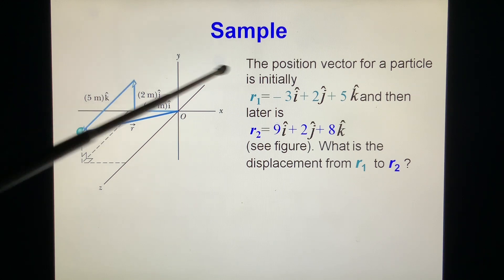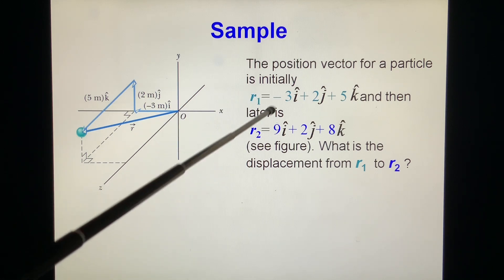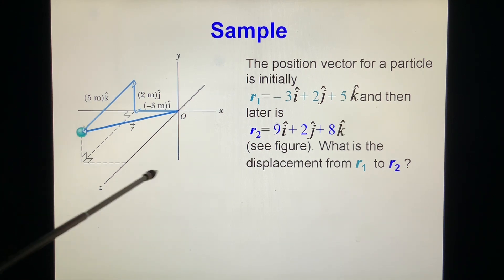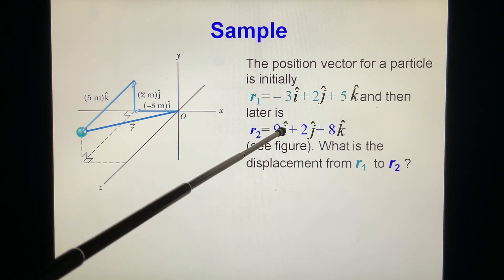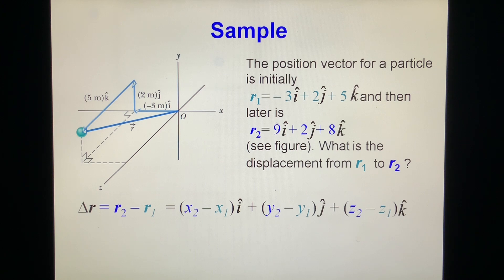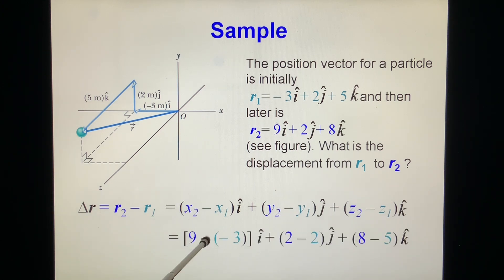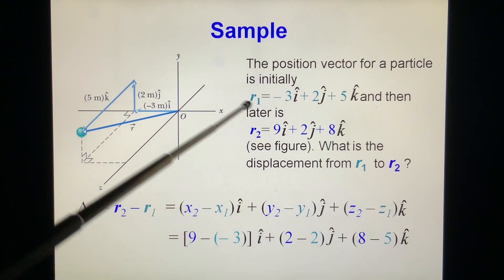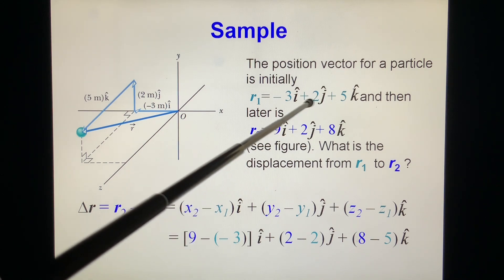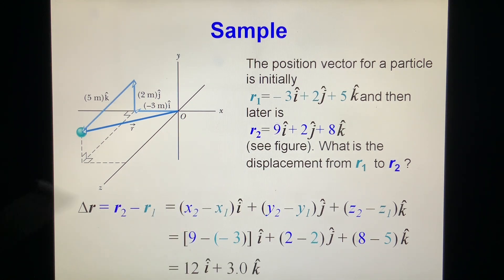Example: The position vector of a particle is initially r1 = −3i + 2j + 5k — which we have met before — and later r2 = 9i + 2j + k. What is the displacement from r1 to r2? By definition, displacement delta r = r2 − r1 (final minus initial). Substituting: x2 = 9, x1 = −3, so x2 − x1 = 9 − (−3) = 12; y2 − y1 = 2 − 2 = 0; z2 = 1 (note: likely k coefficient). We get the answer very easily.